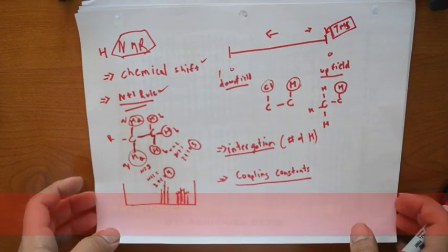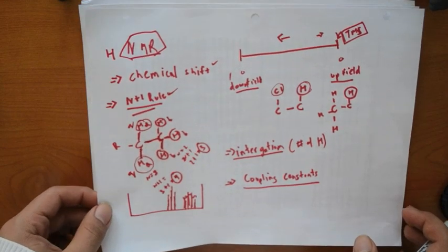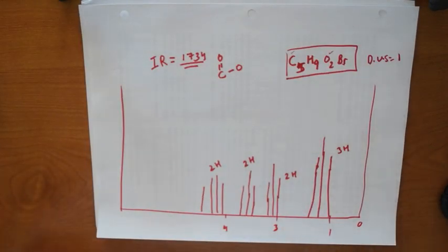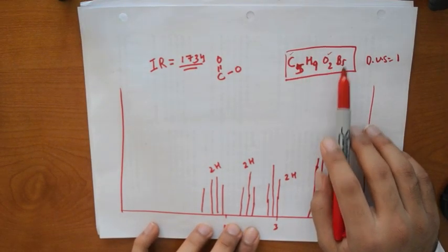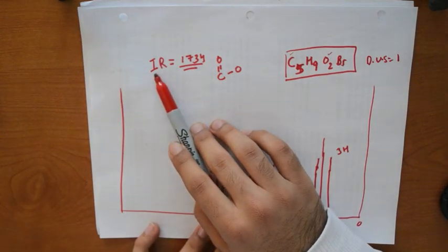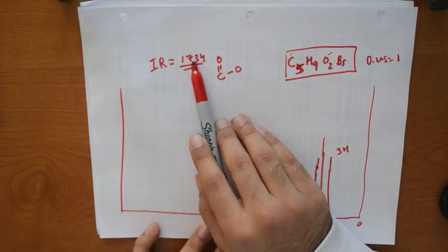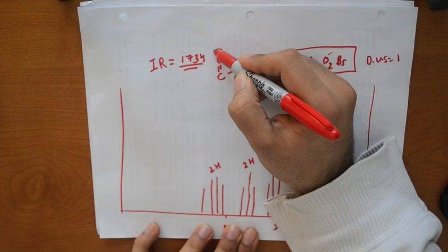Okay, so we'll move on to a problem now. This is a typical problem that they would give you for NMR. I'll give you a little bit of extra information to fill in the gaps. They give you a molecular formula of C5H9O2Br, an IR spectrum of 1734 which tells you the functional group is an ester, and they also give you your NMR spectrum.